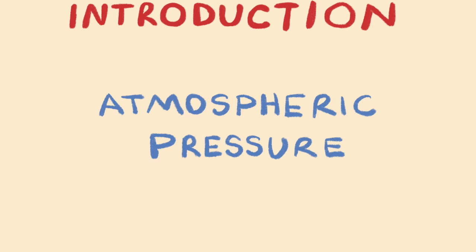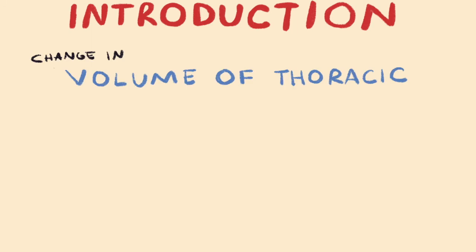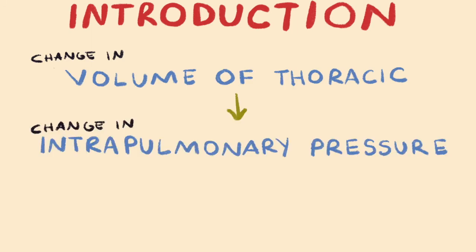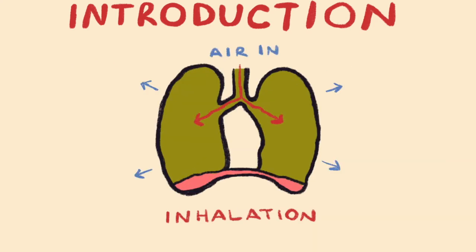Altogether, pulmonary ventilation relies perhaps most heavily upon differences between atmospheric pressure and intrapulmonary pressure. Any changes to the volume of the thoracic cavity will lead to changes in intrapulmonary pressure, which will then lead to changes in airflow. So let's break this down further by talking about what occurs during inhalation, what occurs during exhalation, and at the end of this video we'll summarize everything together.